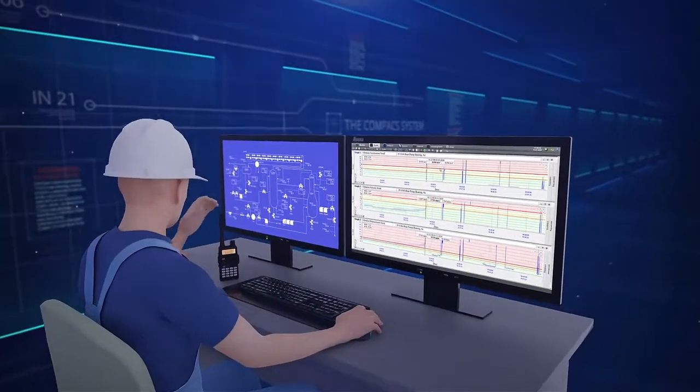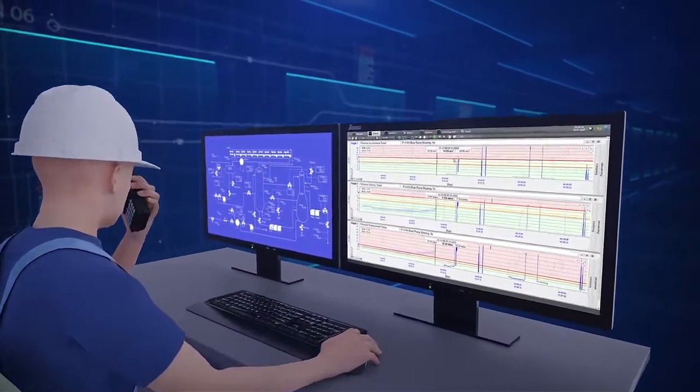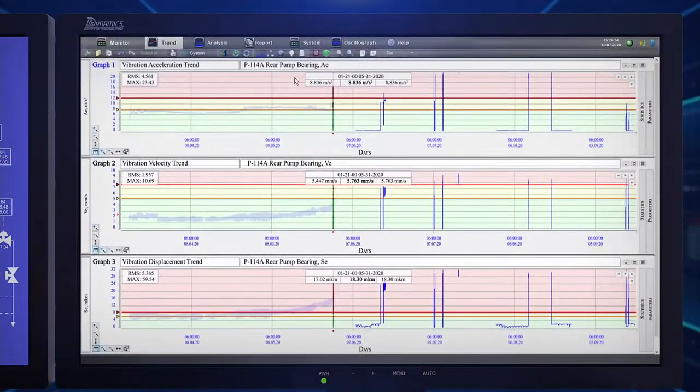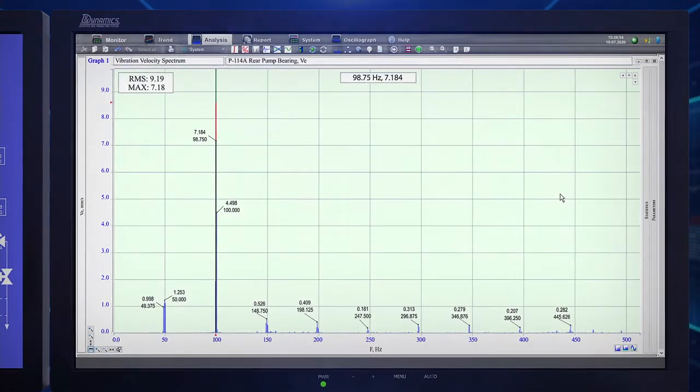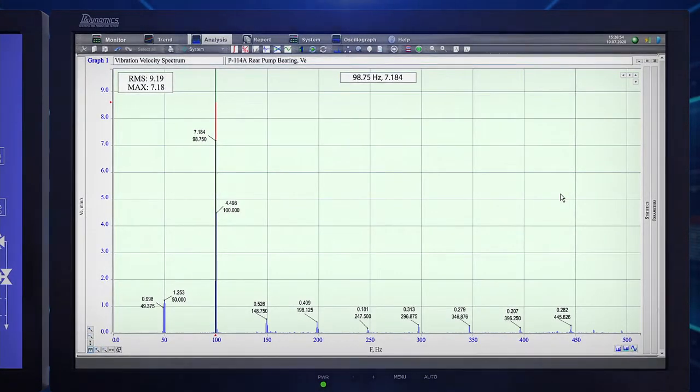To clarify the system's recommendations, the staff looked at the analysis screen. It's pretty clear that the vibration velocity and displacement spectra has a large peak at the 2x frequency. This is indicative of misalignment.